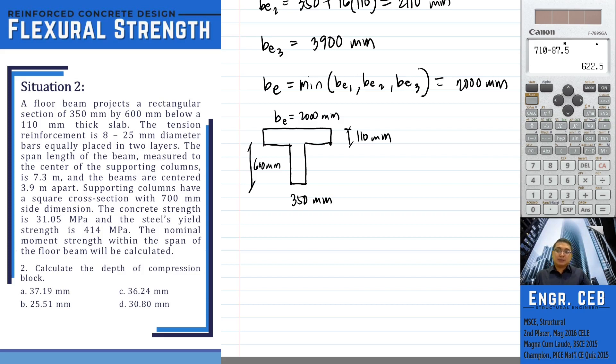Problem two, calculate the depth of compression block. Since we already have the effective flange width, we now have the complete dimensions of our T-section. So in getting the depth of the compression block, we can now start with the equilibrium of the compressive force and the tensile force.